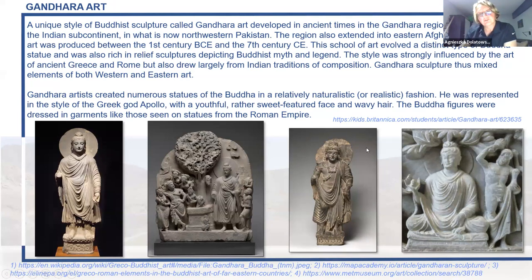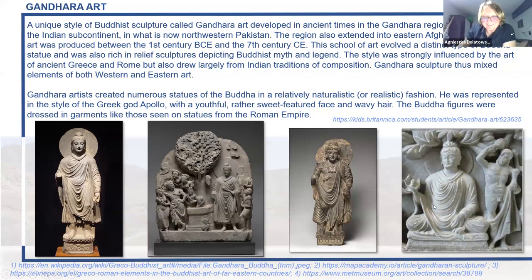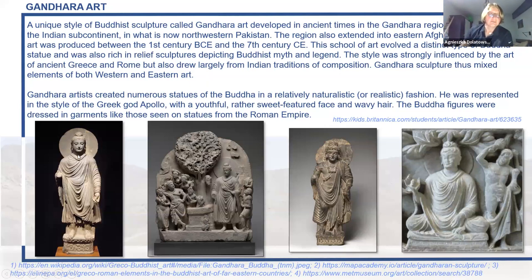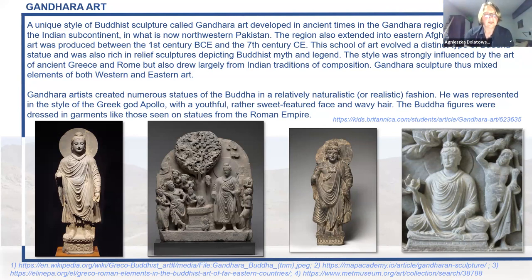DAFA did the survey and divided the area of Mes Aynak into three zones: the red zone, the orange zone, and the green zone. The green zone was everything that should be blown up by the Chinese company — all sites there were to be destroyed. DAFA found only 19 sites within the red zone, but later research showed there were many more than that. Here you have Kuhi Ainak — the place where most of the copper ore is located, and the most visible landmark in this landscape. It dominates over the valley where the rest of the site is located.